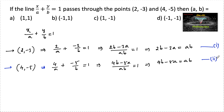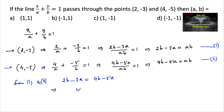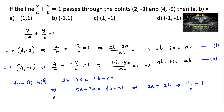From equations 1 and 2, we can write 2b minus 3a is equal to 4b minus 5a. Simplifying: 5a minus 3a is equal to 4b minus 2b, so 2a is equal to 2b, giving us a upon b is equal to 1. That is, the ratio a to b is equal to 1 to 1.